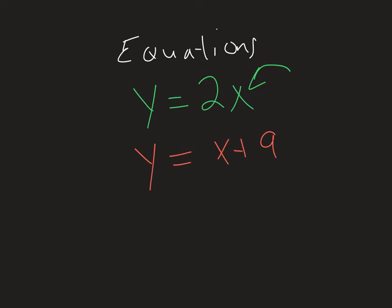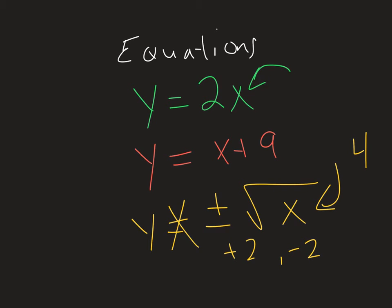One example would be y equals plus or minus the square root of, say, x. So in this case, if I plug in 4, then I would have a positive 2 and a negative 2. I'd have two outputs. This would not be a function.